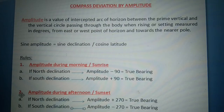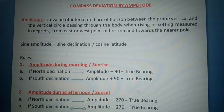Number two: Amplitude during afternoon or sunset. Letter A: if north declination, amplitude plus 270 degrees equals true bearing. Letter B: if south declination, amplitude minus 270 degrees equals true bearing.